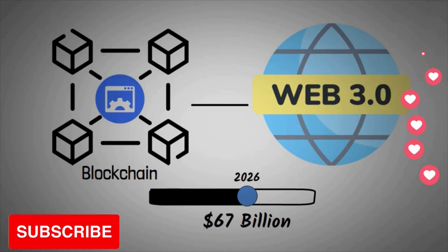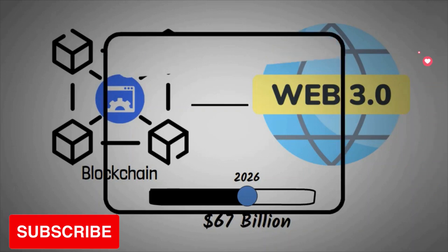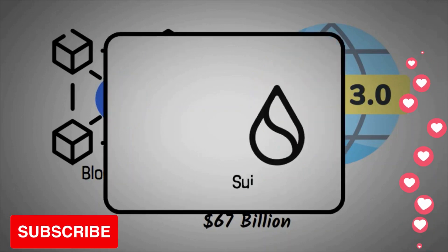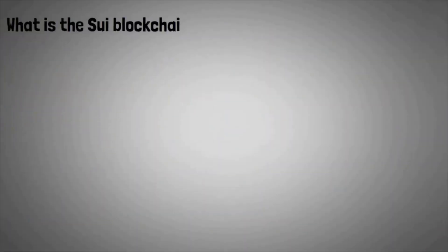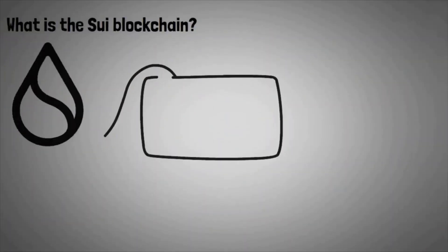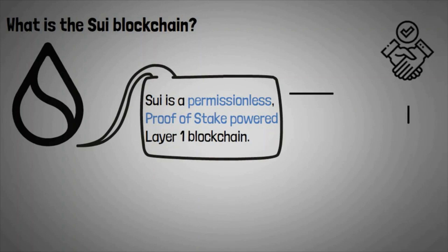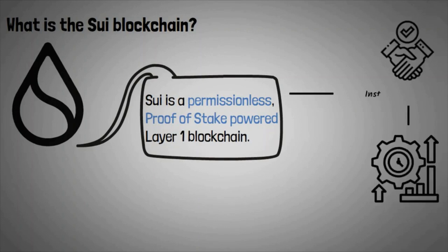As a result, many new, state-of-the-art platforms have been introduced recently, one of which is the Sway blockchain. Sway is a permissionless, proof-of-stake-powered layer-1 blockchain that has been designed to provide instant settlement and high throughput, as well as empower a multitude of next-gen, latency-sensitive decentralized applications.